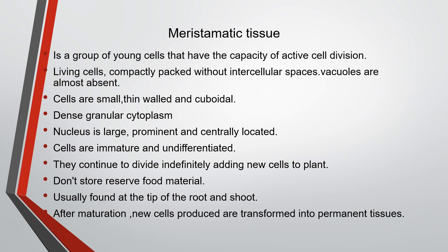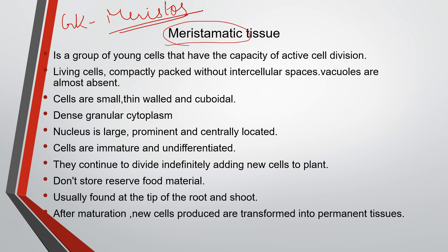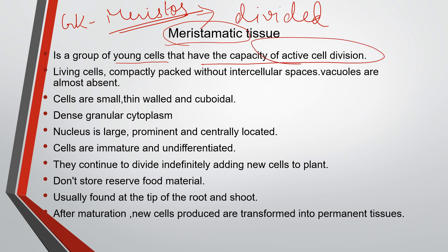The first type is meristematic tissue. The term meristematic comes from the Greek word 'meristos,' which means divided. Meristematic tissues are a group of young cells which have the capacity of active cell division. These young cells divide continuously and have the capacity for active cell division.